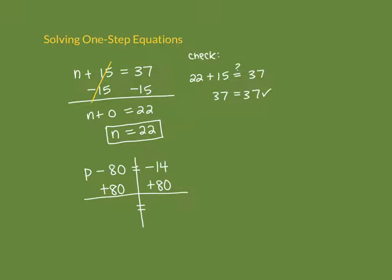Adding 80 to the left side: negative 80 plus 80 becomes zero, zeroing that term out and leaving just p. On the right side, negative 14 plus 80 — when you have negatives and positives, use a calculator to be safe, but this is really just 80 minus 14, which is 66. So p equals 66.